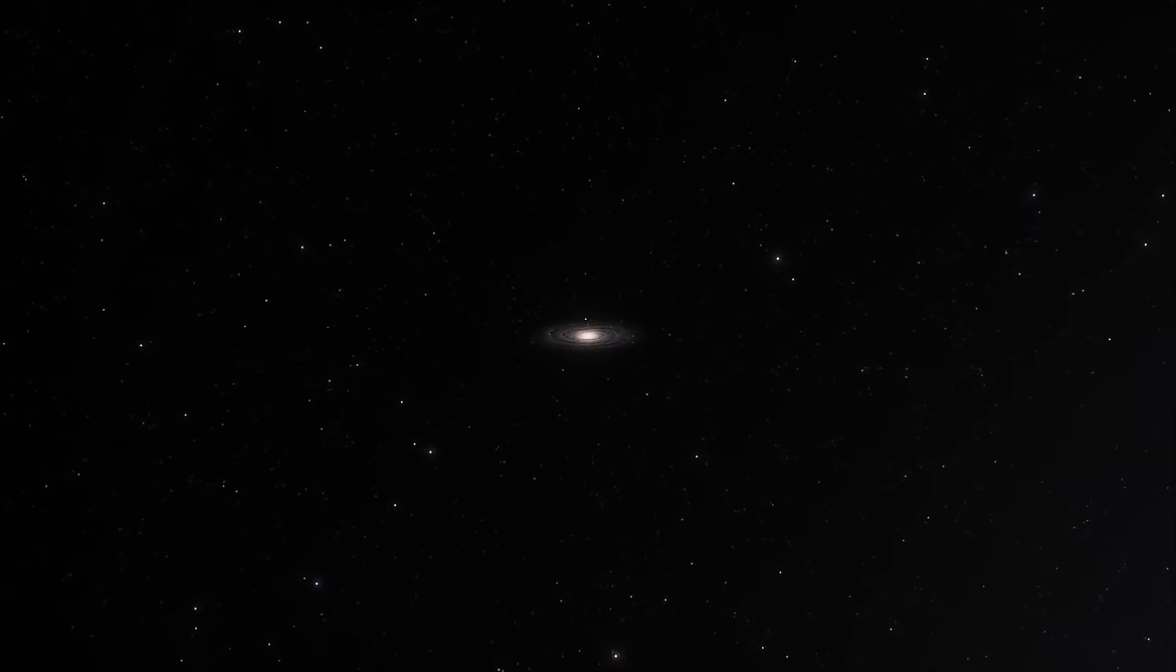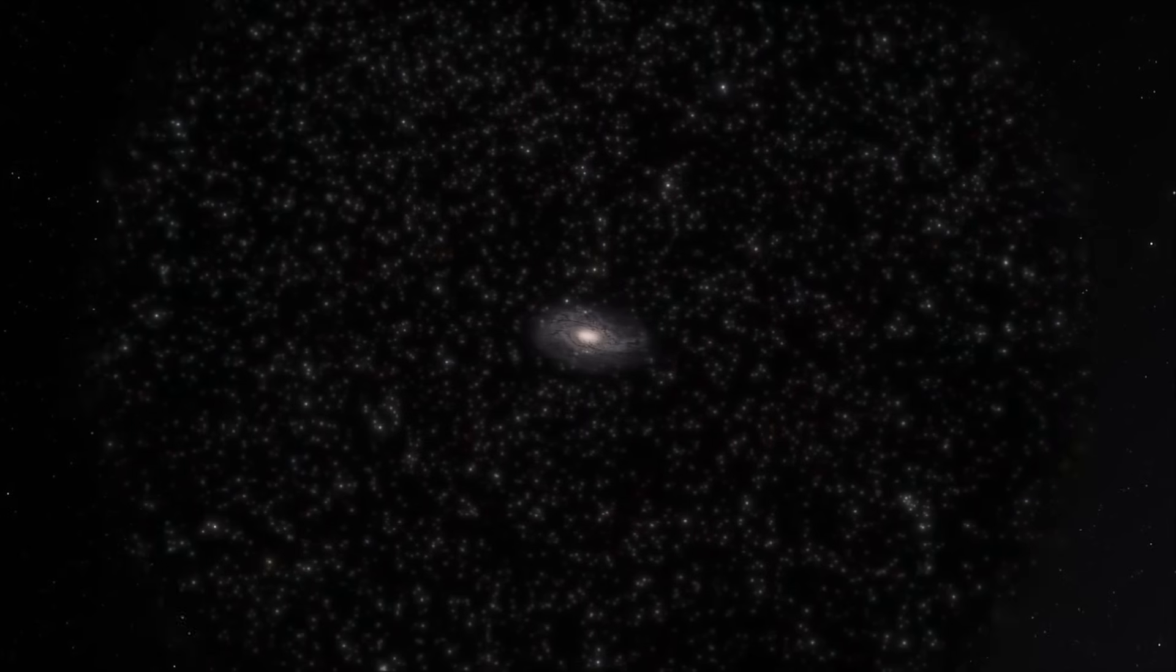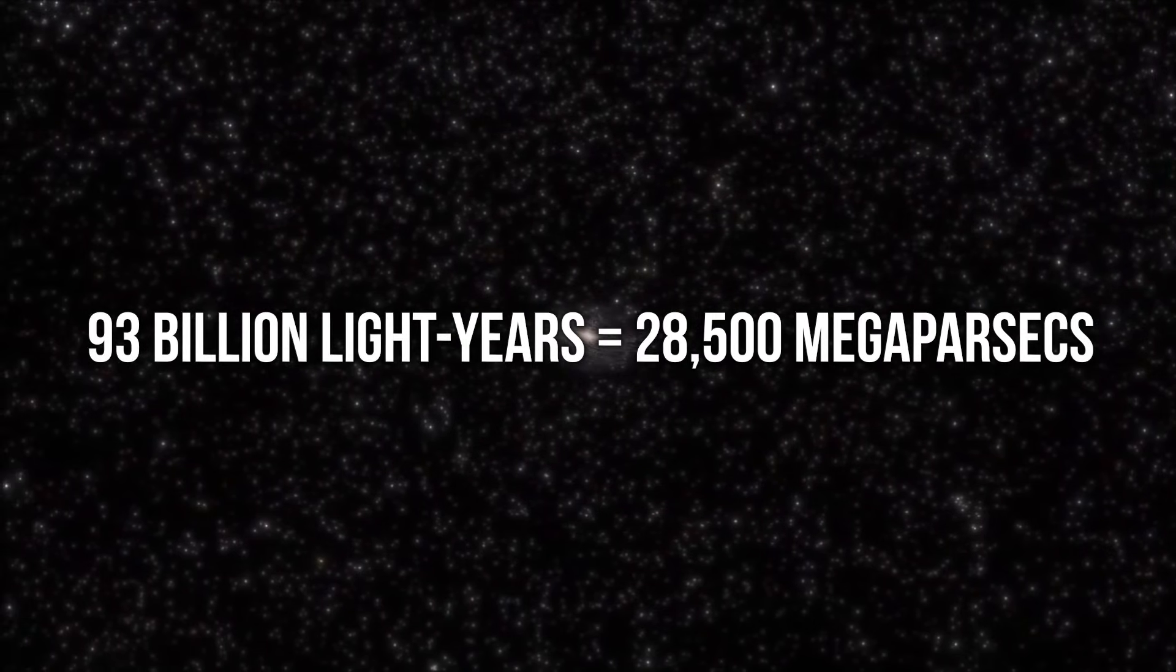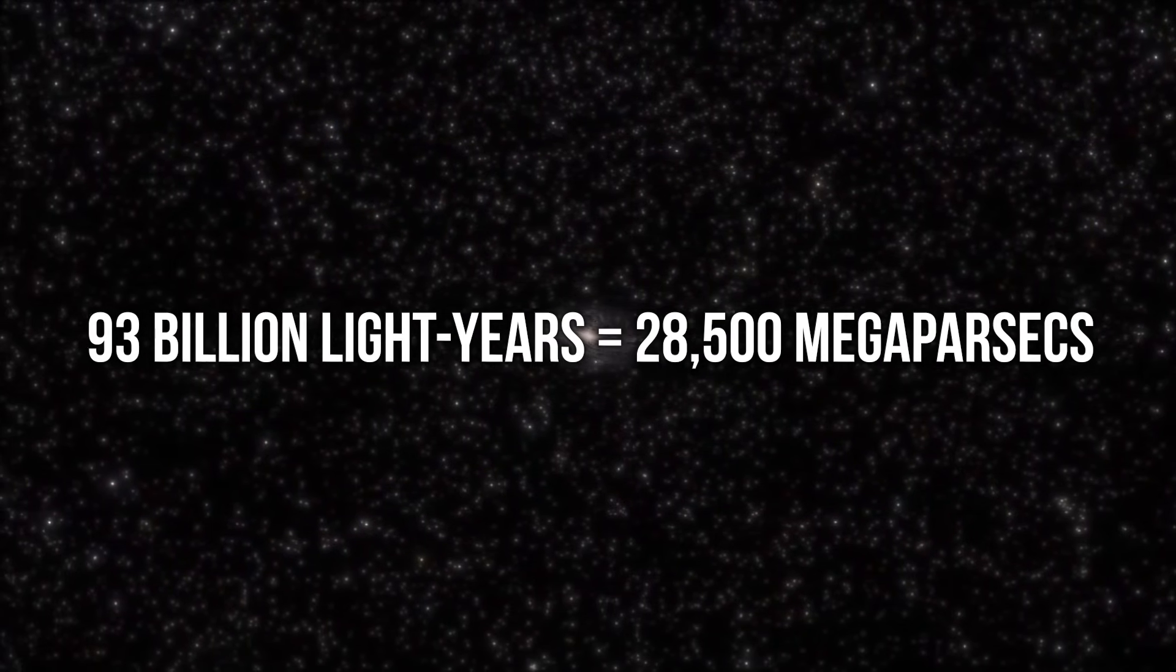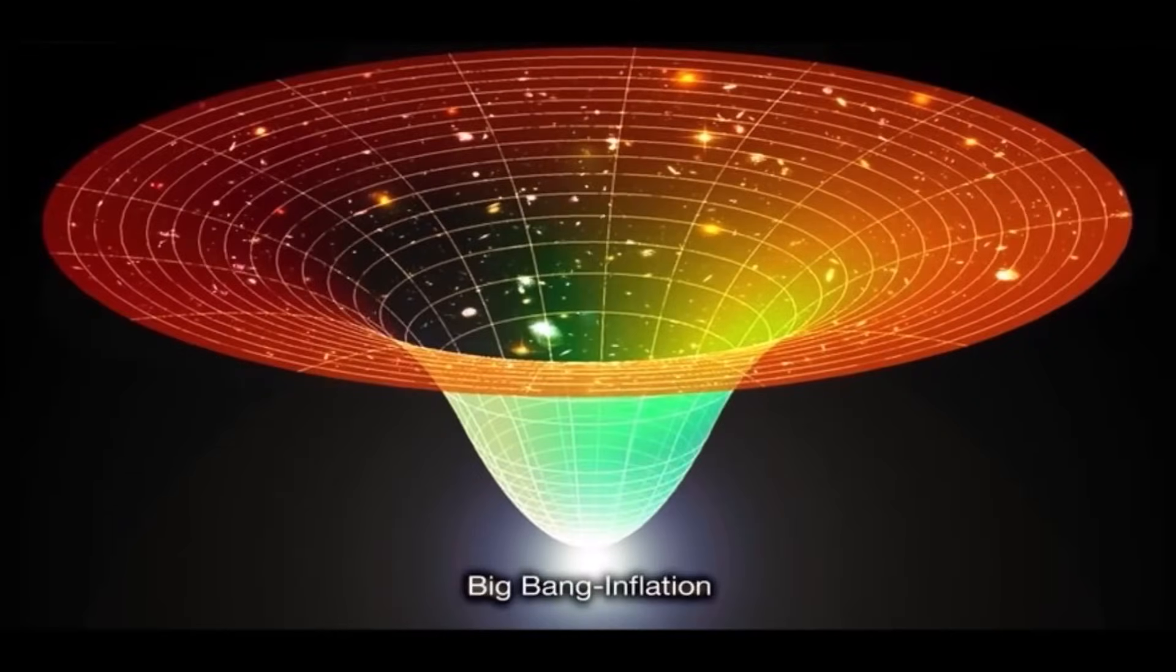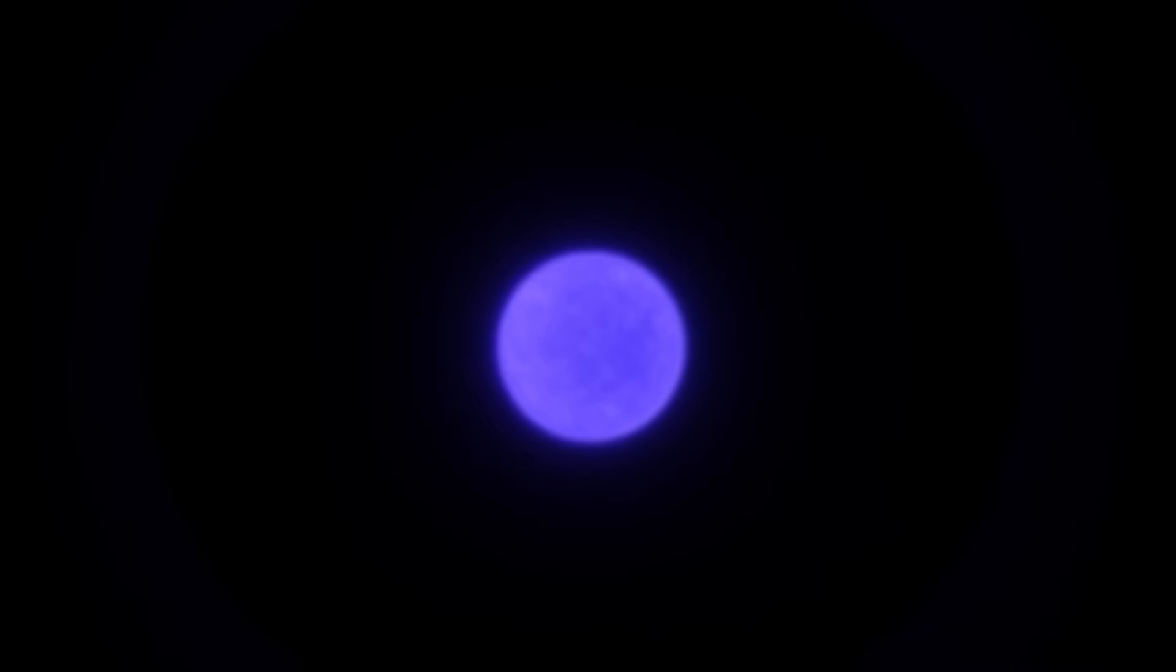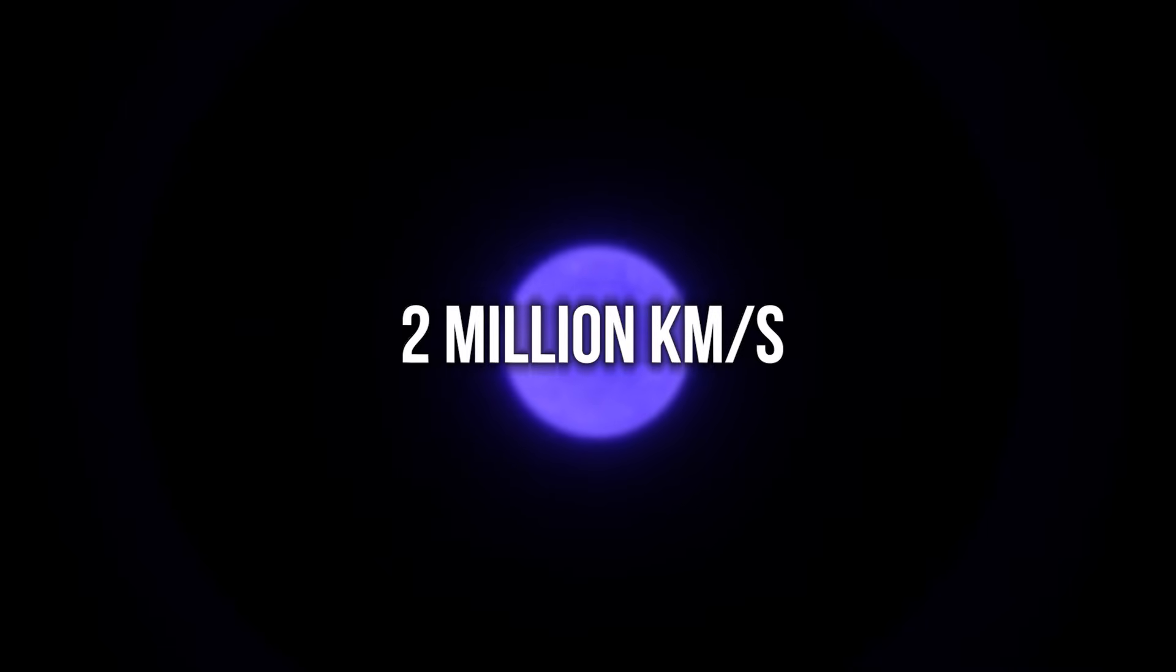To put it in simple terms, we often say that the observable universe is about 93 billion light years wide, which is equivalent to 28,500 megaparsecs. Now, if we consider the points that are the farthest away, they appear to be moving away at an astonishing speed of approximately 2 million kilometers per second. That's almost 10 times faster than the speed of light.